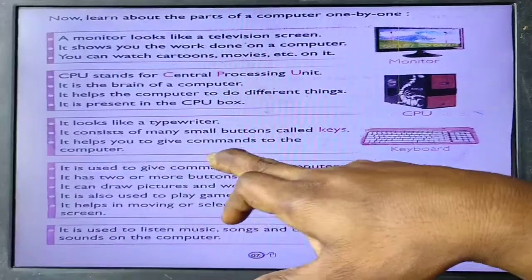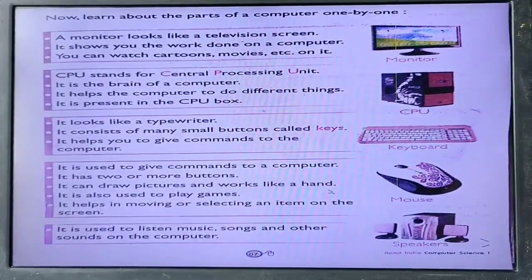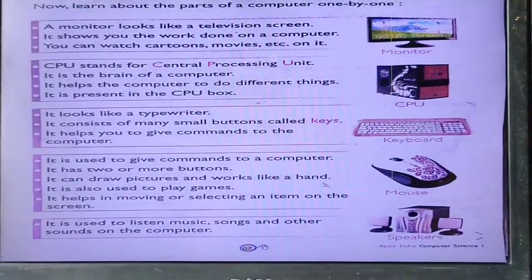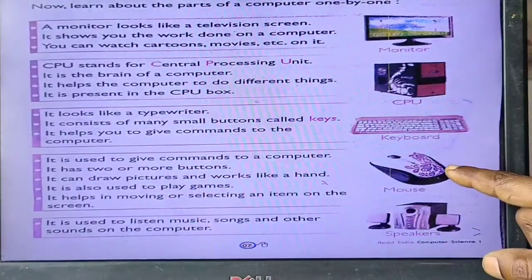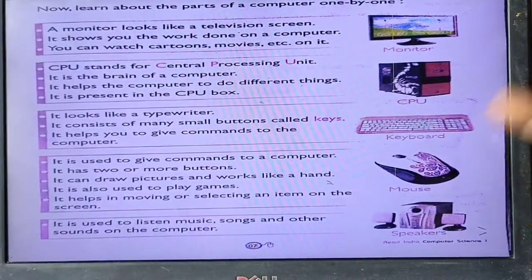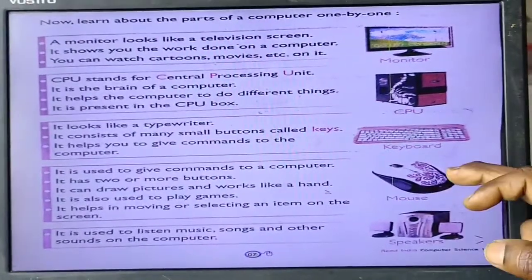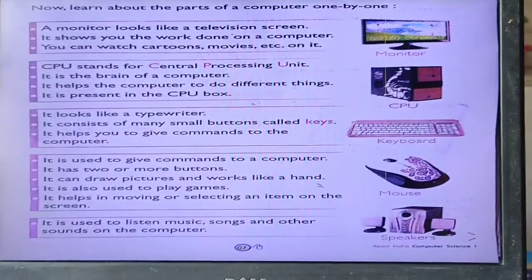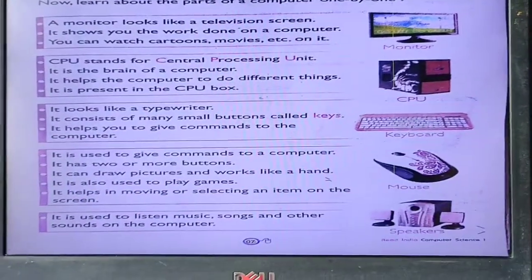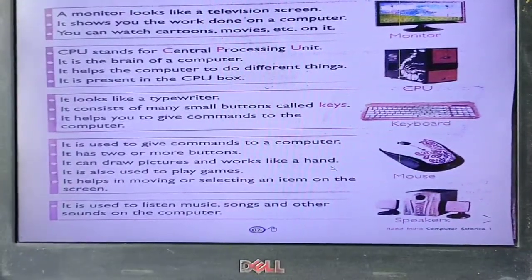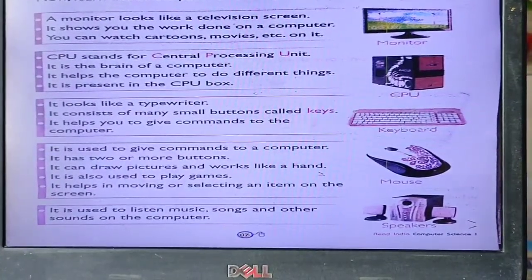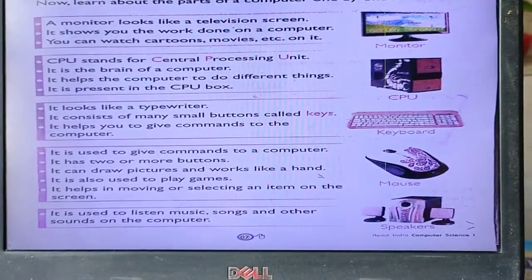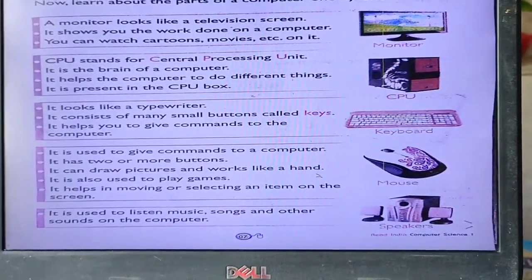Mouse. It is used to give commands to a computer — yeh mouse hume command deta hai. Hum jo bhi kaam karte hain aur yahan click karte hain, toh woh hamare monitor mein show karta hai. Mouse has two or more buttons. It can draw pictures and work like a hand — yeh hamare haath ke jaisa kaam karta hai. It is also used to play games. It helps in moving or selecting an item on the screen — iske through koi bhi item select karte hain, jaise folders mein ja ke click karo ge toh woh folder mouse ke dwara khulega.